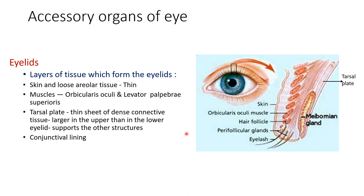What are the layers of tissue forming the eyelids? Starting from the outside: there is the skin and loose areolar tissue, which are thin. Then it contains muscles — the orbicularis oculi and levator palpebrae superioris. Then it has the tarsal plate, a dense connective tissue layer which is larger in the upper eyelid than the lower eyelid, and it supports the other structures.